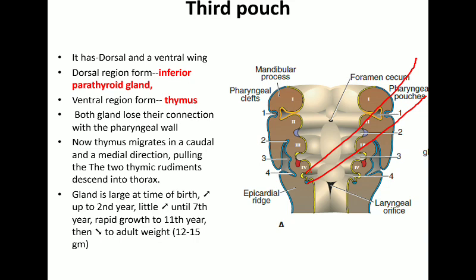The dorsal region of the third pouch — shown as the yellow part — will form the inferior parathyroid. The ventral region, shown in red, will form the thymus.